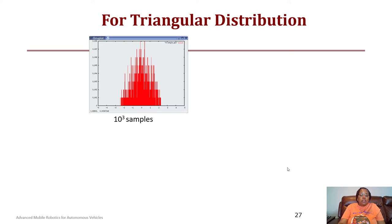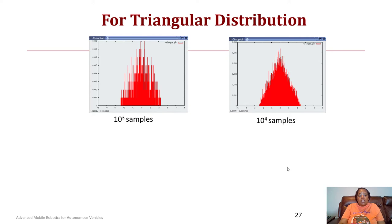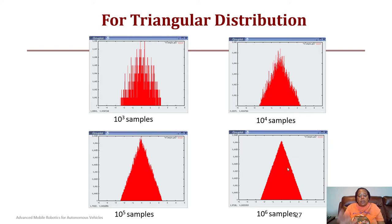Similarly for a triangular distribution, you would get something the same way. Here we're looking at what happens, and you see with a million samples, obviously the more samples you give, the more it's going to track. But even with a thousand samples, you're already starting to see what the triangular distribution looks like.